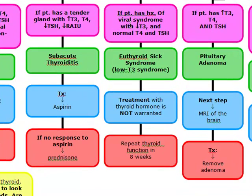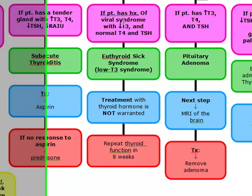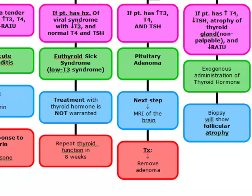If the patient has a history of a viral syndrome with a decreased T3 and a normal T4 and TSH, this is euthyroid sick syndrome, also known as low T3 syndrome. The only thing that's abnormal is the decreased T3 — everything else is normal. Look for a history of viral syndrome with a low T3. You don't have to treat this patient with thyroid replacement; we're just going to repeat thyroid function in 8 weeks.